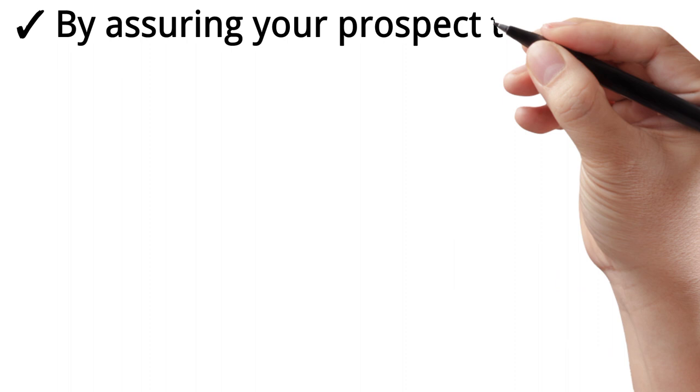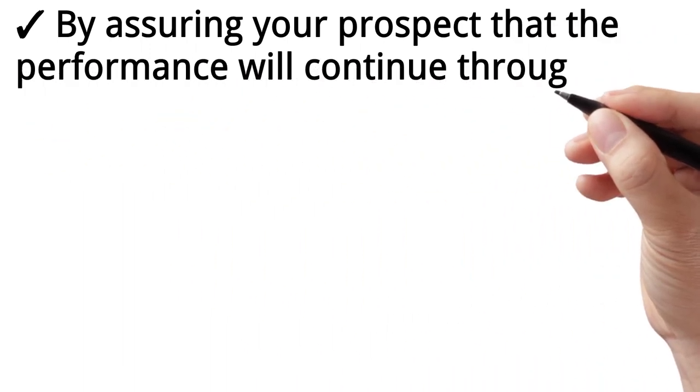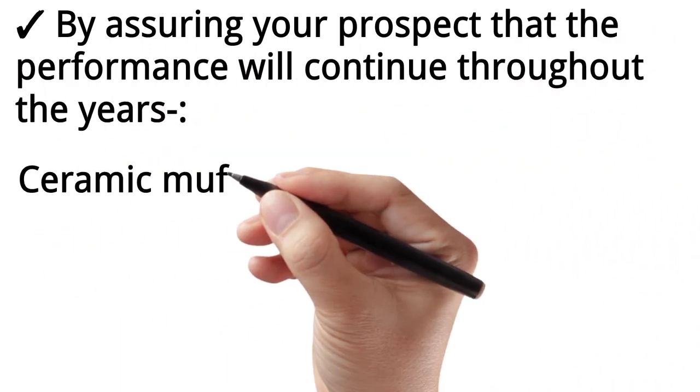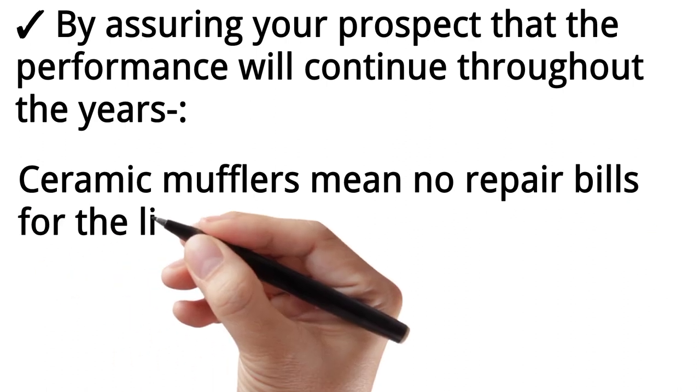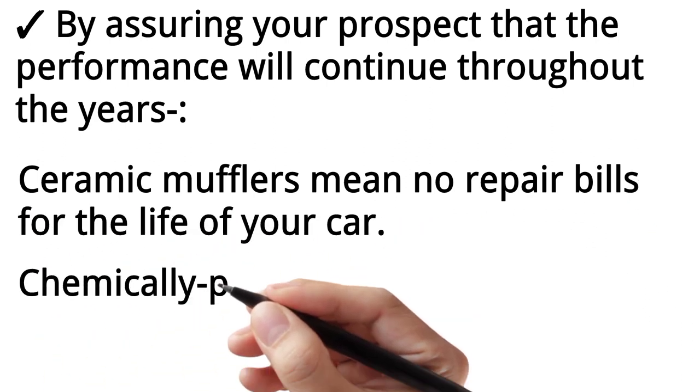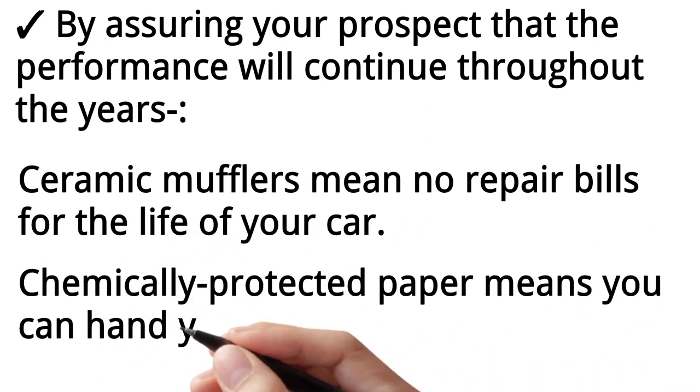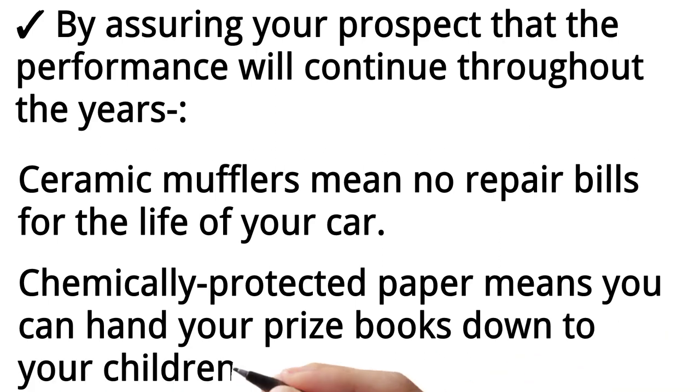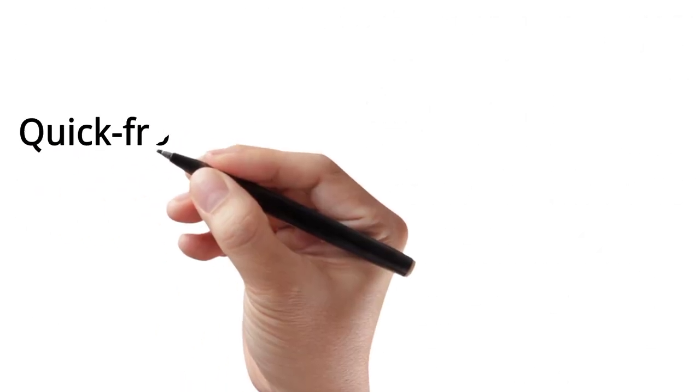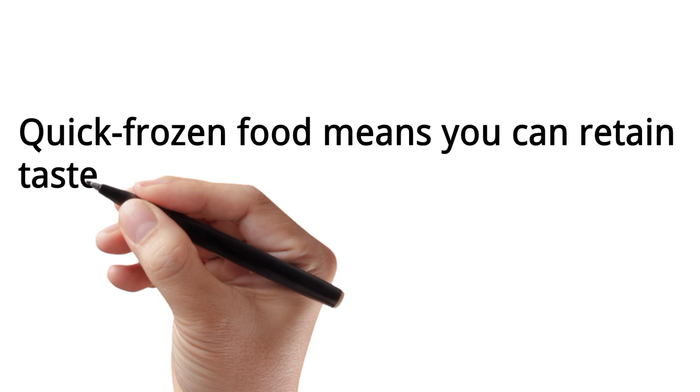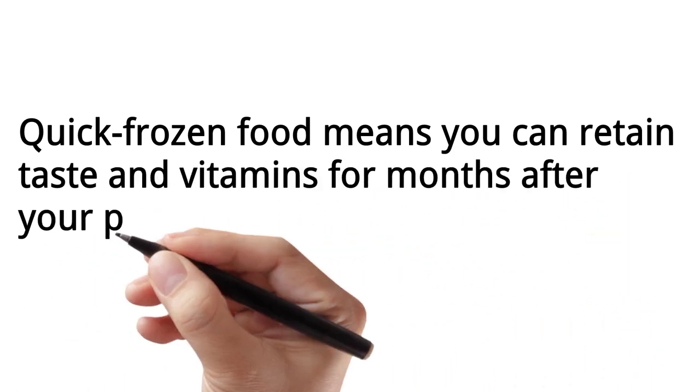By assuring your prospect that the performance will continue throughout the years. Ceramic mufflers mean no repair bills for the life of your car. Chemically protected paper means you can hand your prize books down to your children. Quick frozen food means you can retain taste and vitamins for months after your purchase.